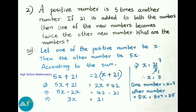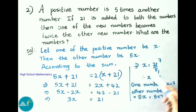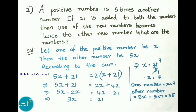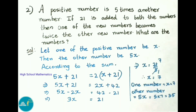x = 21/3 = 7. Therefore, one number is x = 7, and the other number is 5x = 5 × 7 = 35. Therefore, the two numbers are 7 and 35.